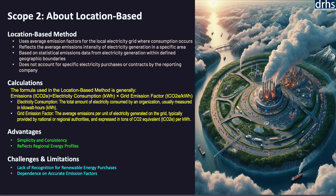In summary, the location-based method under scope 2 greenhouse gas emissions is a practical and widely accepted approach that reflects the average carbon intensity of the electricity grid in a given region. While it offers simplicity and consistency, it may not fully capture the impact of renewable energy procurement, making it essential for organizations to also consider the market-based method to get a comprehensive view of their scope 2 emissions.